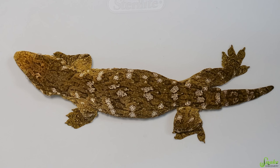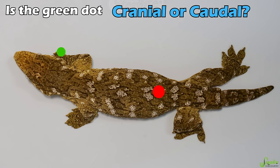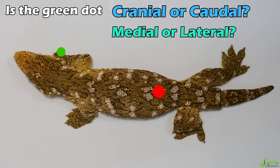That's going to be all the terms we cover in today's video, so now it's time for a quiz! We've got two dots here on this Lycianus gecko. The red one is on her midline down her spine and the green dot is on the front right toe. So where is the green dot in relation to the red dot? Is it cranial or caudal to the red dot, and is it medial or lateral to it?